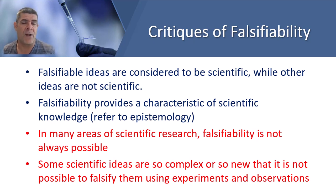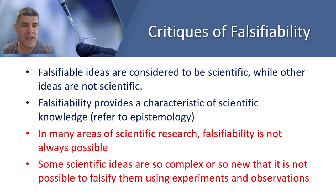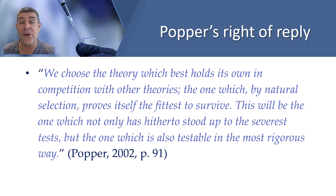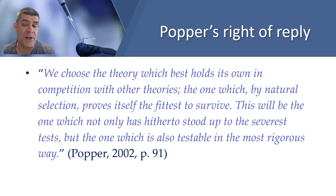This suggests there might be a grey area where the principle of falsifiability may not apply to all scientific ideas. Disciplines such as evolutionary biology, geology, and astronomy contain ideas that are scientific but really are not falsifiable. Popper himself initially rejected Darwin's theory of evolution by natural selection, but later reversed his position, even incorporating Darwin's survival of the fittest concept into his analysis of preferred theories. He wrote: 'We choose the theory which best holds its own in competition with other theories — the one which, by natural selection, proves itself the fittest to survive. This will be the one which not only has hitherto stood up to the severest tests, but is also testable in the most rigorous way.'